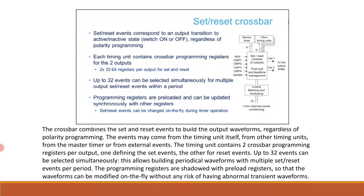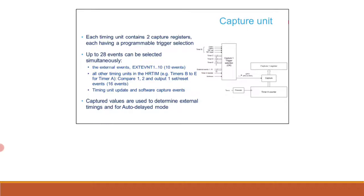In parallel with compare units, each timer embeds two capture units. The capture triggers transfer of the current counter value into the capture register. This is useful for determining external timings and for auto delayed mode. It offers the possibility to measure the effective duty cycle in cycle-by-cycle current control converters where the PWM pulse is terminated when the current comparator trips. Capture triggers can be selected from among 28 sources: external events, adjacent timing units, adjacent output waveforms, as well as update and software events. It is possible to simultaneously enable several trigger sources.